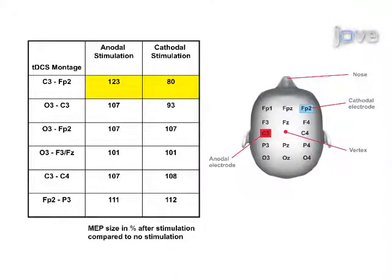Different electrode montages can vary the effects of tDCS. For example, whether cortical excitability is increased or decreased is dependent on stimulation polarity as well as other stimulation parameters.